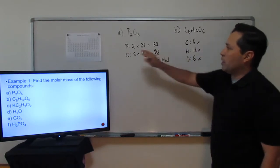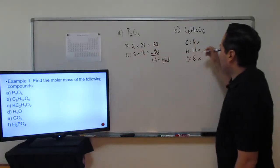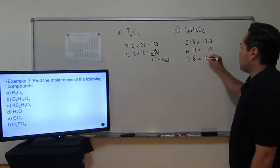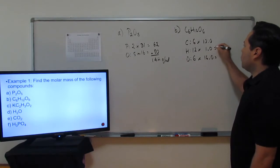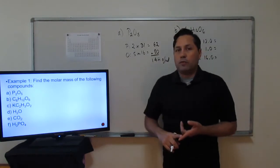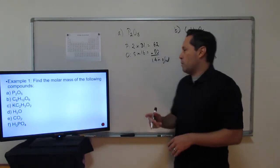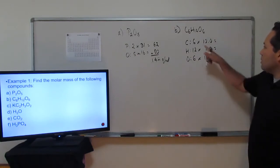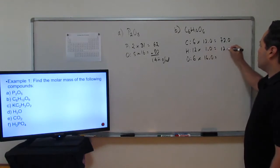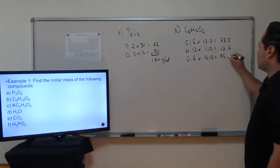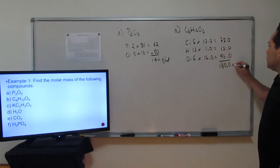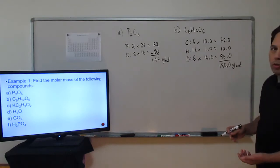Multiply them times the mass from the periodic table. Carbon is 12.0, hydrogen is 1.0, and oxygen is 16.0. My periodic table has been rounded off to the nearest tenth; in reality, oxygen is 15.9994, but we'll round it to 16. Multiplying gives products of 72, 12, and 96, which together give a grand total of 180 g/mol. That's the molar mass of glucose.